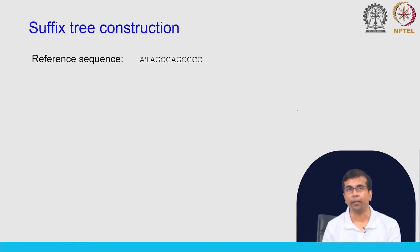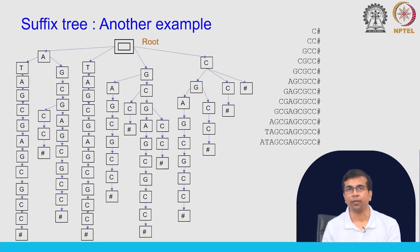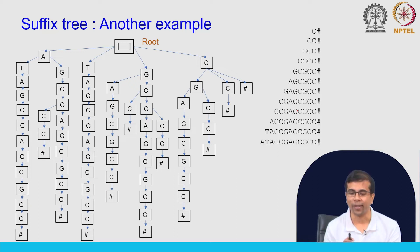We will take another example — a slightly more complex one. As before, we now have more suffixes to consider and we need to find paths from root to leaf for each of these suffixes. We do this step by step.